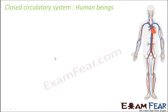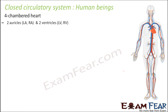In human beings we also have a closed circulatory system. As you can see in this picture, blood flows throughout our body through tube-like structures. Some of them are relatively thicker tubes while some are extremely thin. Blood is confined only within these tubes — you will not find blood in the body cavities.